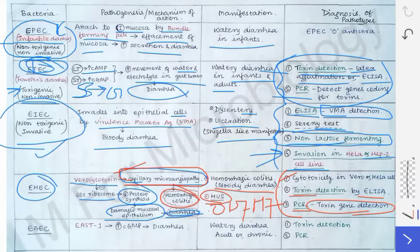Remember: when writing the diagnosis, first diagnose E. coli (as described in the E. coli Part 2 lecture), then diagnose the pathotype. Without first diagnosing E. coli, you cannot proceed to diagnose the pathotype. After confirming it is E. coli, use the specific tests to identify which pathotype it is.